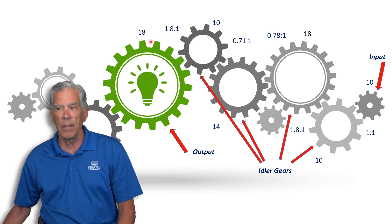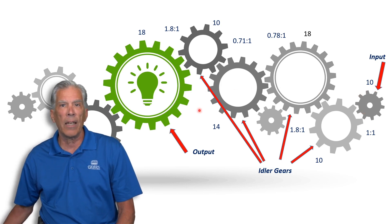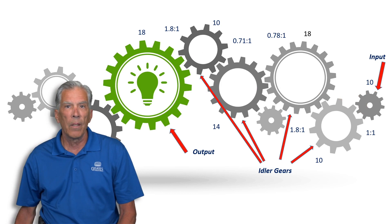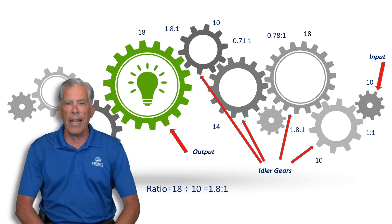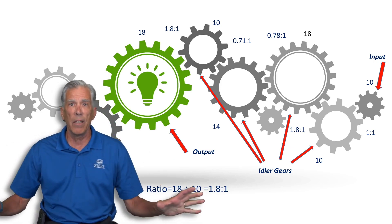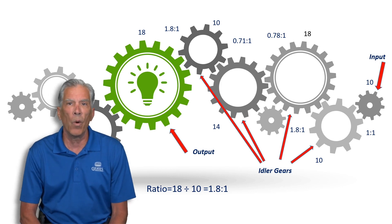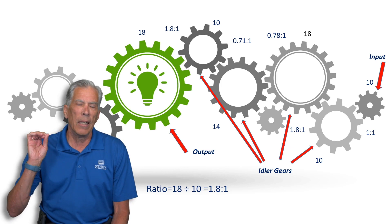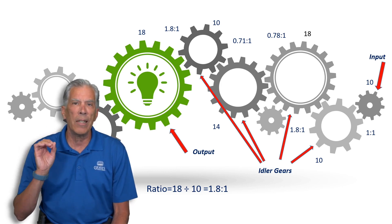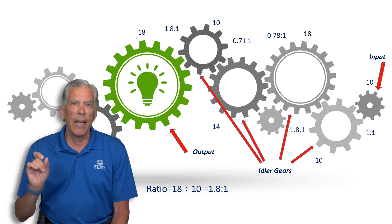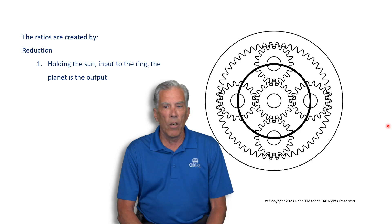The ratio is determined by the final output — 18 — divided by the input. None of the idler gears count; they are irrelevant. In this example it's 18 divided by 10, so for this entire setup the ratio is 1.8:1. This is a key point, because it would be easy to treat a planetary as though the teeth of the planets matter — they do not. They are idler gears.